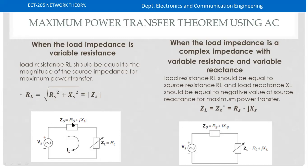The load impedance is a complex impedance, that is RL plus jXL. The source impedance is RL minus jXC.